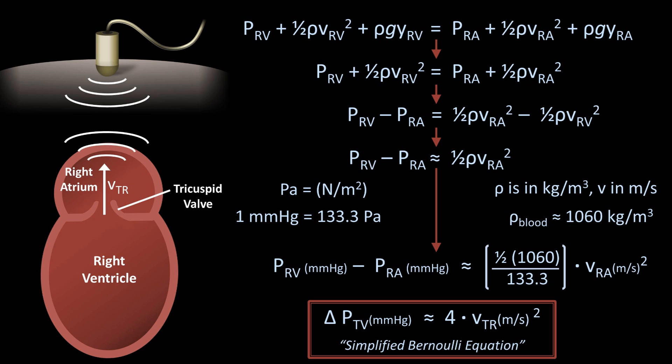So why is the simplified Bernoulli equation so special? From lesson 4, we can use hydrostatic pressure to estimate a person's central venous pressure from the height of jugular venous distension, and central venous pressure equals right atrial pressure. Adding the central venous pressure to our tricuspid valve pressure gradient gives us an estimate of right ventricular systolic pressure, which in the absence of pulmonic valve disease equals the pulmonary artery systolic pressure. Combining hydrostatics and Bernoulli allows us to non-invasively estimate blood pressures within a patient's pulmonary artery, giving insight into a hugely diverse collection of cardiac and pulmonary diseases.